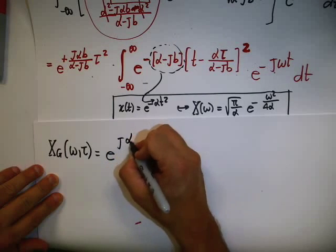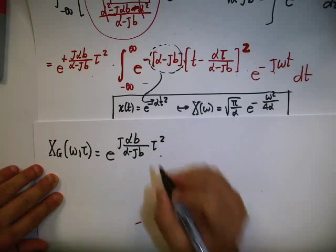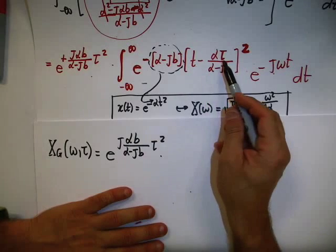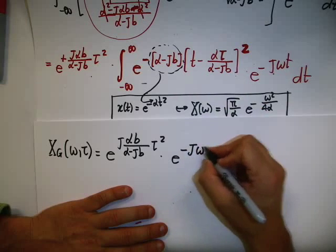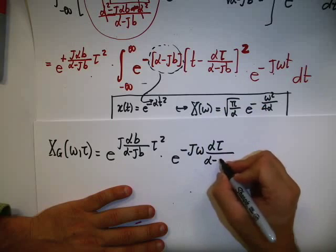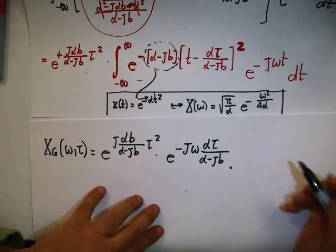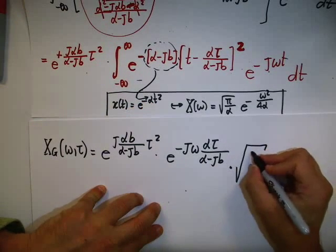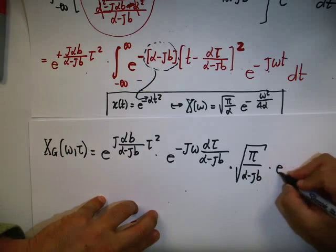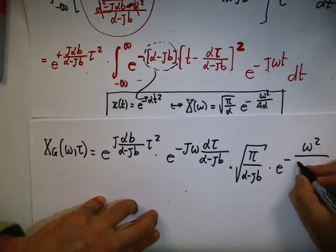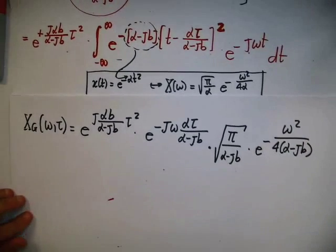So Xg(omega, tau) equals e to the j*alpha*b / (alpha minus j*b) * tau squared, times e to the minus j*omega*alpha*tau / (alpha minus j*b) — the shift term — times the Fourier transform of e to the minus t squared, which is square root of pi / (alpha minus j*beta) times e to the minus omega squared / (4*(alpha minus j*beta)). That's very impressive — we were able to compute the Gabor transform of a chirp signal analytically.